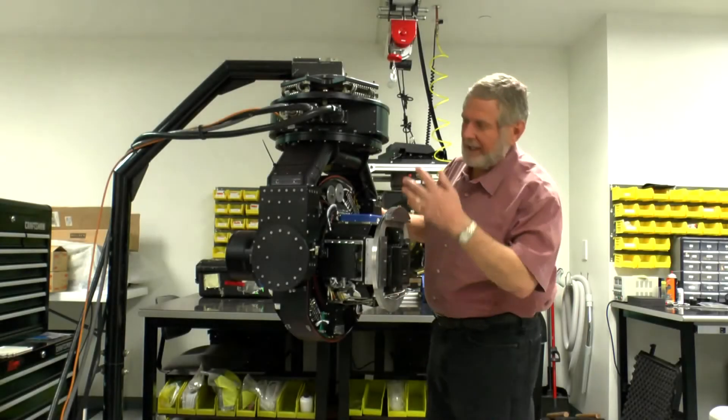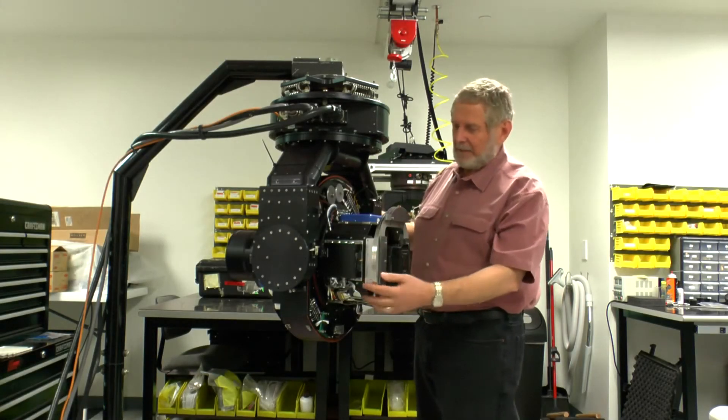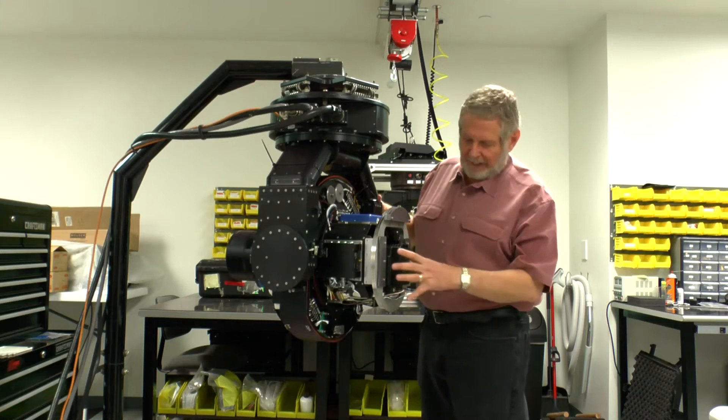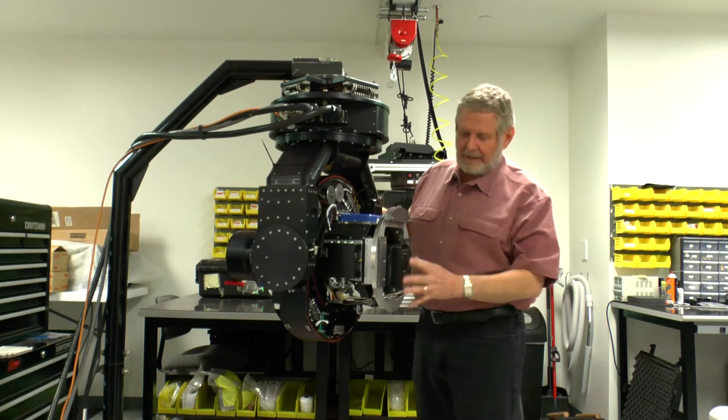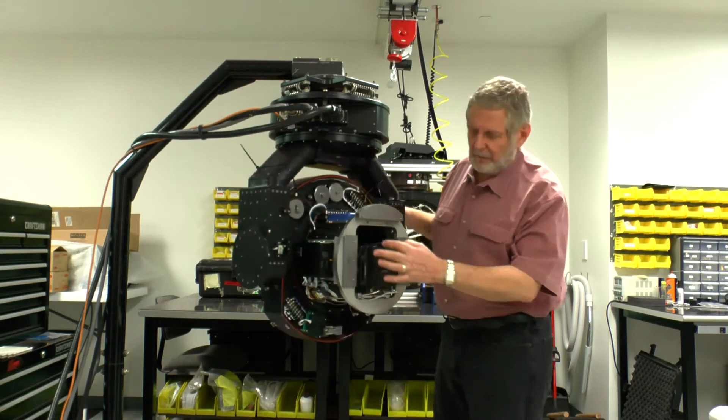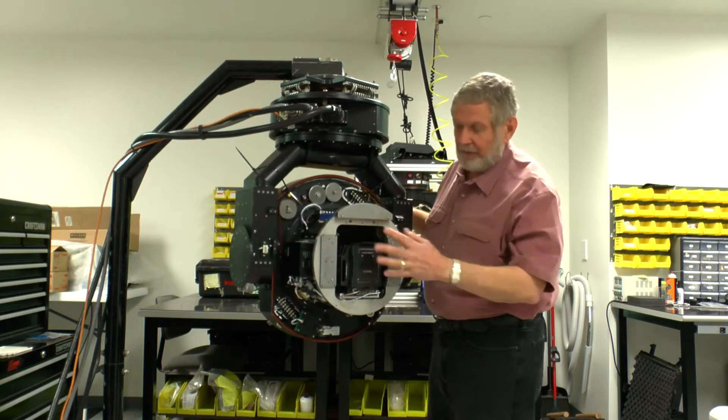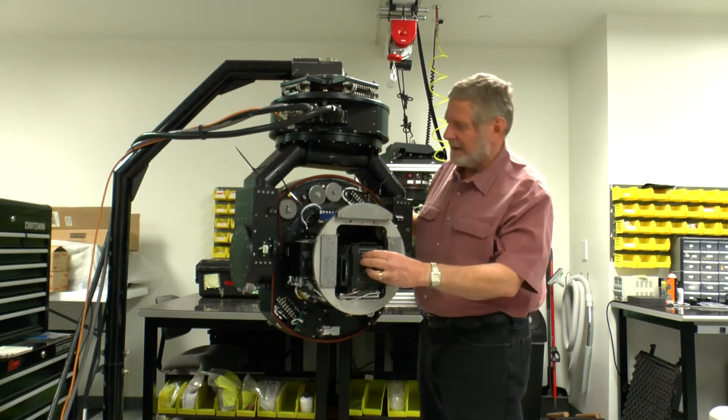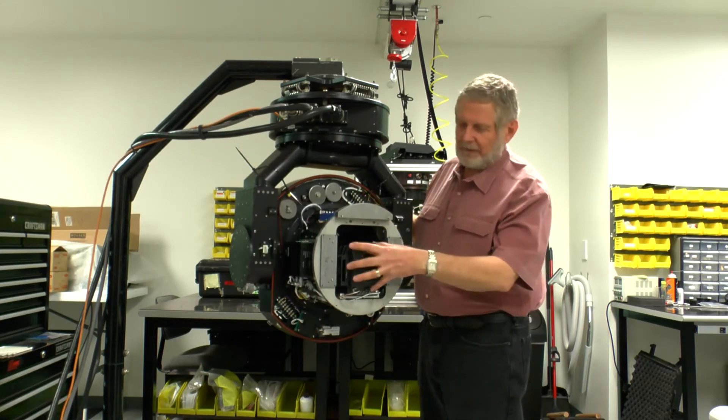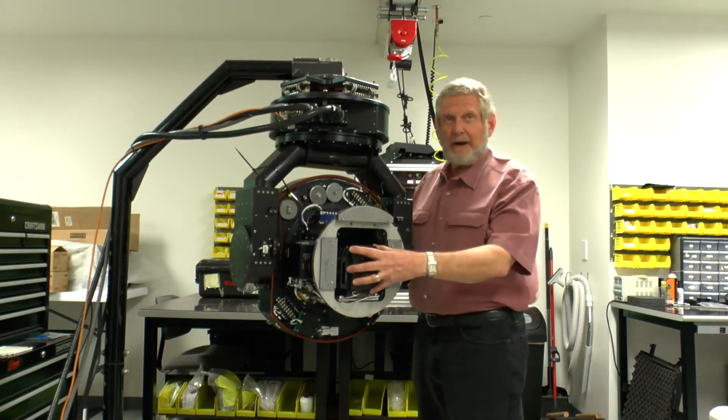What we've done here is we've taken our smaller gimbal and we've put the Red Epic in here, and then we matched it up with the best zoom lens possible for this camera that gives us a full 5K image.